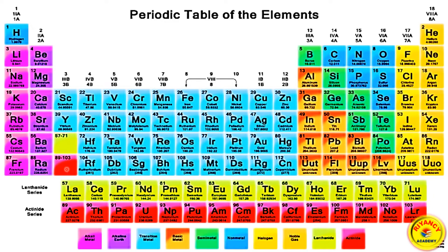Here are F-block elements. The Actinide series covers elements 89 to 103.